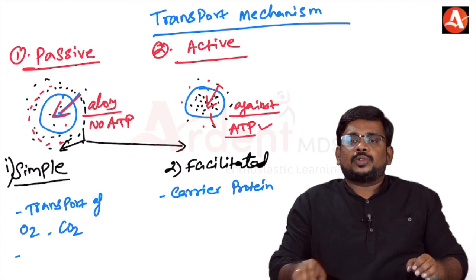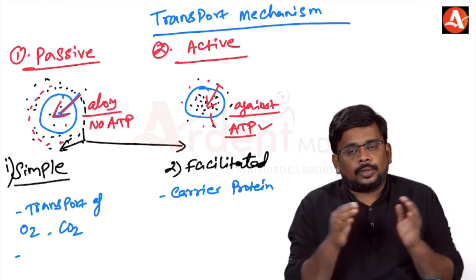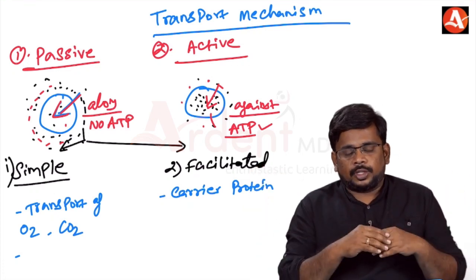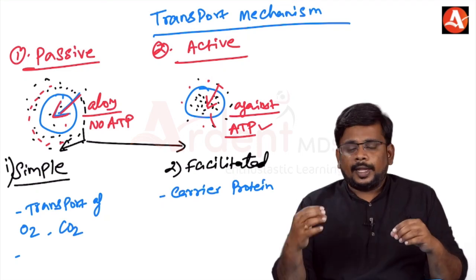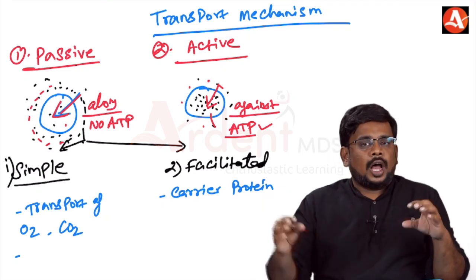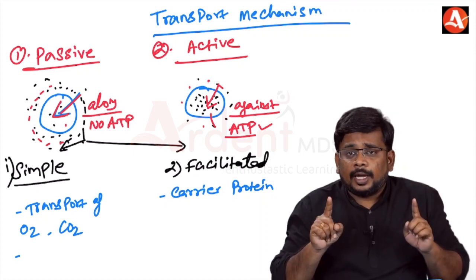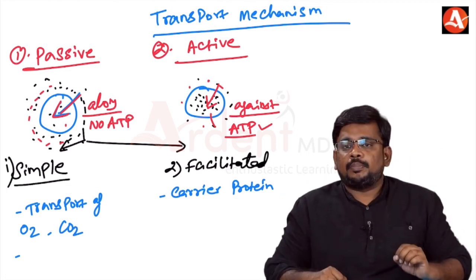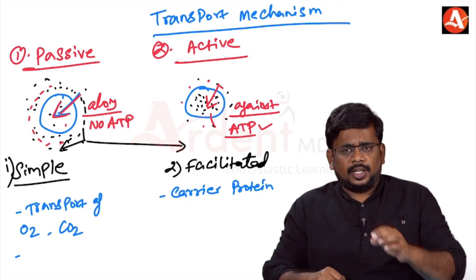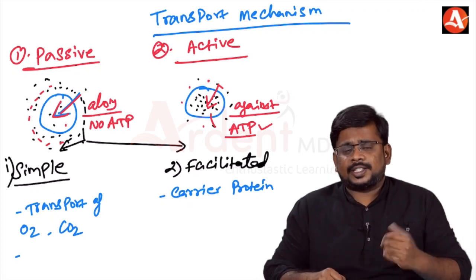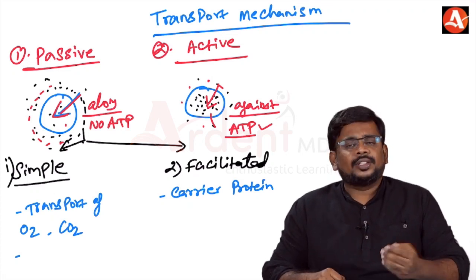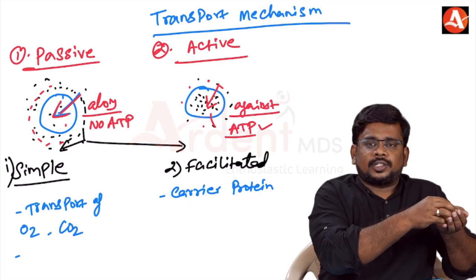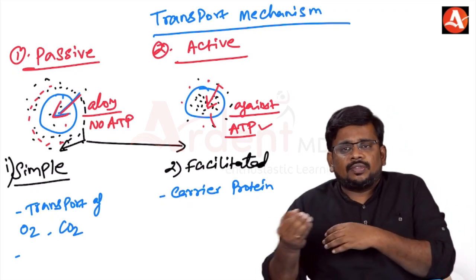The process of passive transport is simply called diffusion, and there are two types: simple diffusion and facilitated diffusion. In simple diffusion, the molecule crosses the membrane without any help from a carrier protein. In facilitated diffusion, the molecule is facilitated by a carrier protein and moves into the lower concentration area.